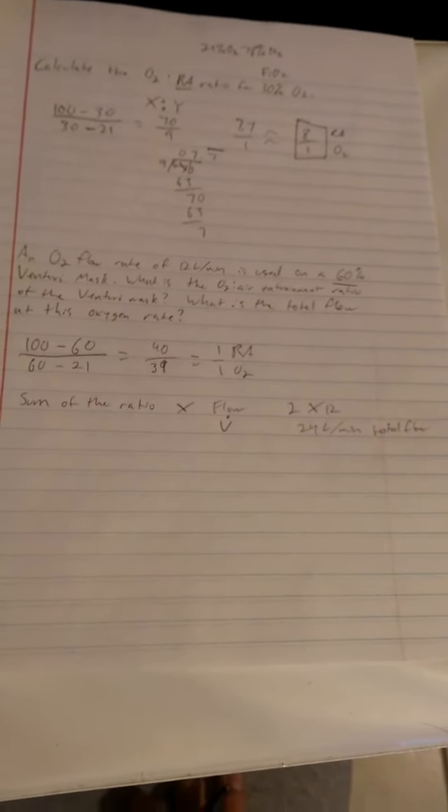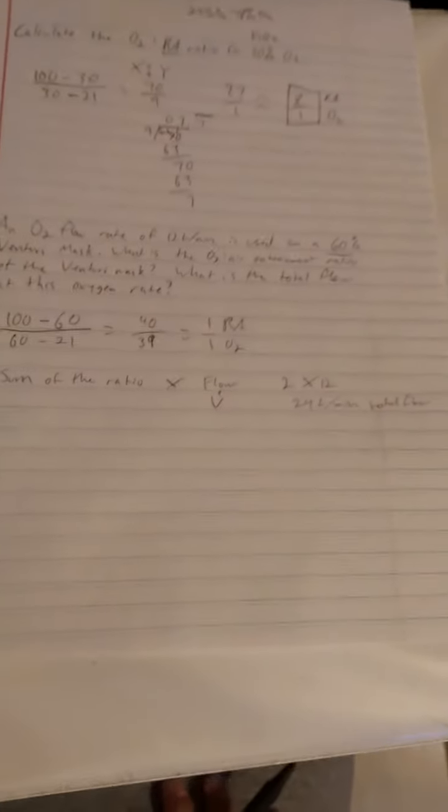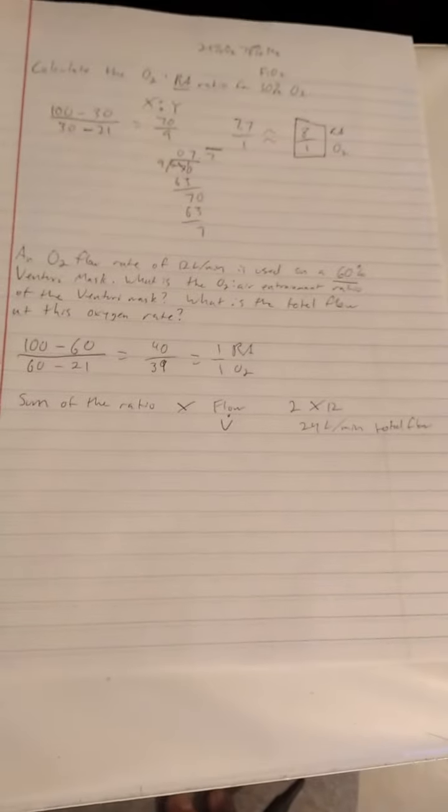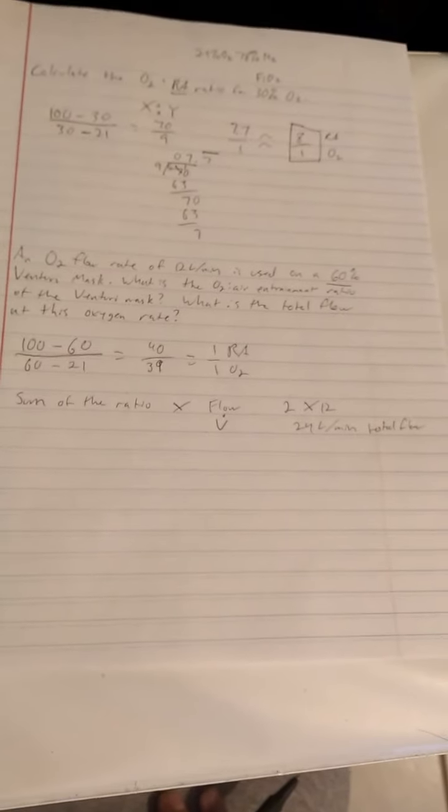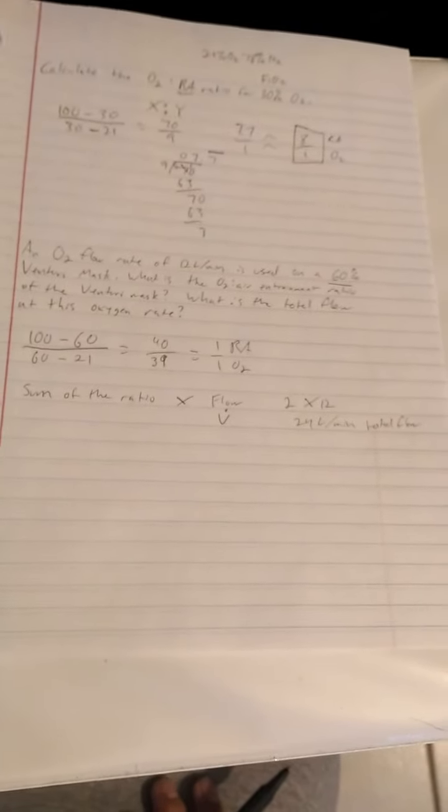Now, sometimes you may be posed with a question after that. We see a total flow of 24 liters. Are we meeting the patient's inspiratory needs? The answer is maybe. There's kind of a golden number that you may learn about, 40 liters per minute, kind of the golden number.